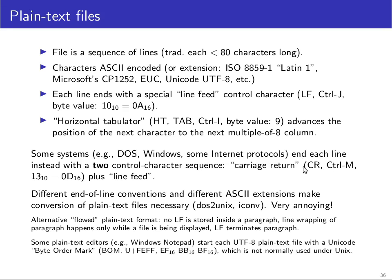The purpose of carriage return in the old teletype days was to do what the name says: take the carriage — the print head — and move it back to the start of the line. This is separate from the line feed control character, also known as LF, which you can get with CTRL-J, decimal value 10 or hexadecimal 0A. The purpose of the line feed character in teletype terminals was to advance the paper by one line.